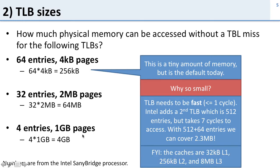Looking at the Sandy Bridge machine itself: the first-level cache is 32 kilobytes, so the level-one TLB easily covers that. The second-level cache is 256 kilobytes, which is also covered. But it also has a third-level cache of 8 megabytes, so you can't cover all of that with just these TLB entries — that's part of the reason we have a level-two TLB and can use larger pages.